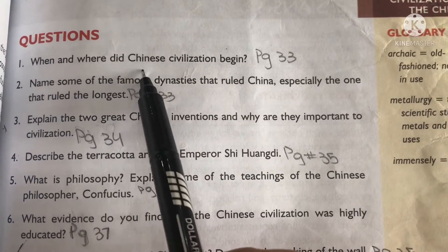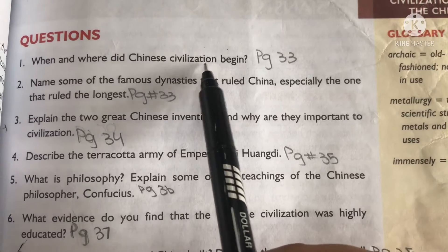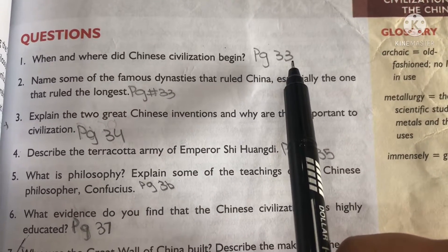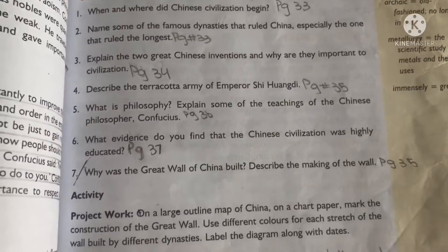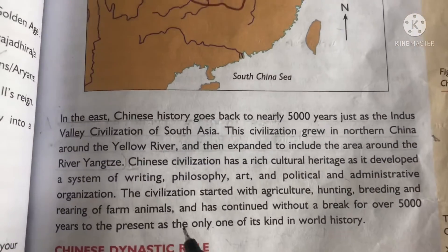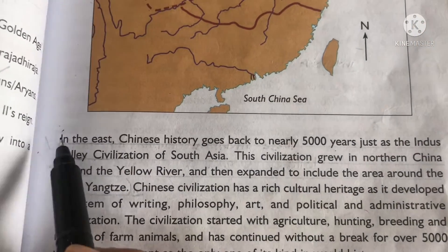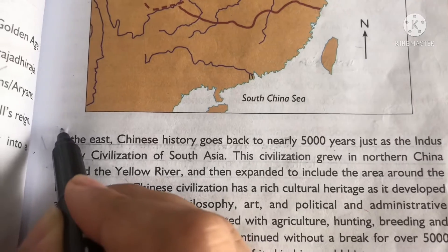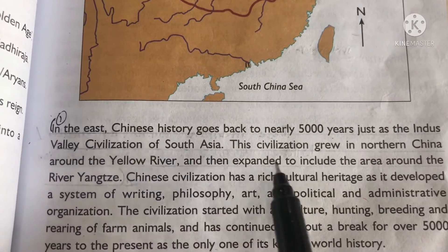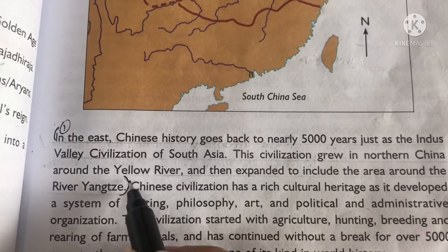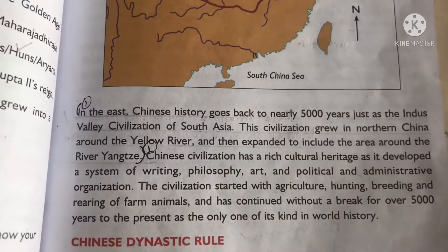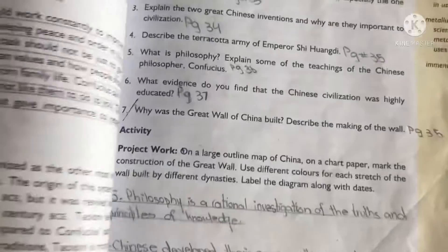Exercise Question 1: When and where did Chinese civilization begin? The answer is on page 33. It starts from the line 'In the east, China's history...' and ends at 'River Yangtze.'